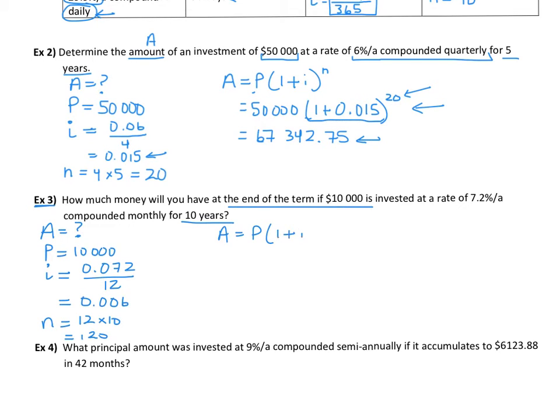So P, 1 plus i to the exponent of n, $10,000, 1 plus 0.006 to the exponent 120. And calculate that all in one step.